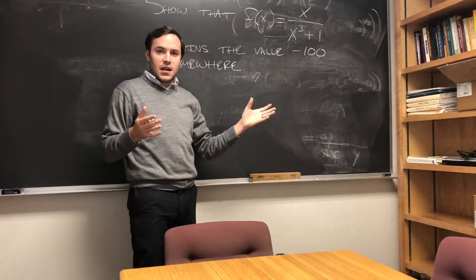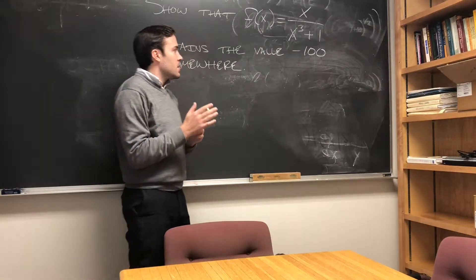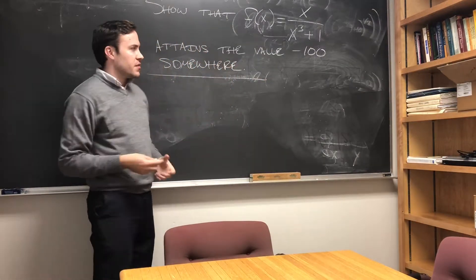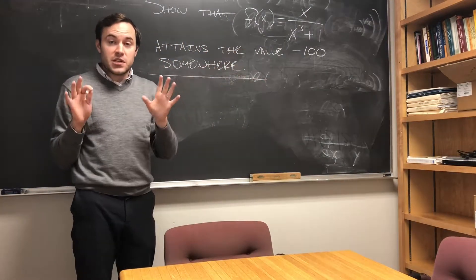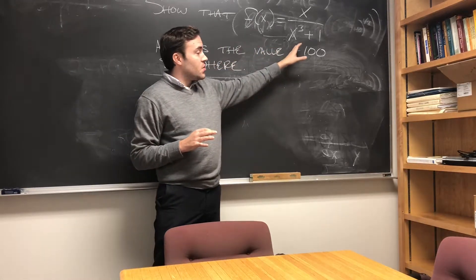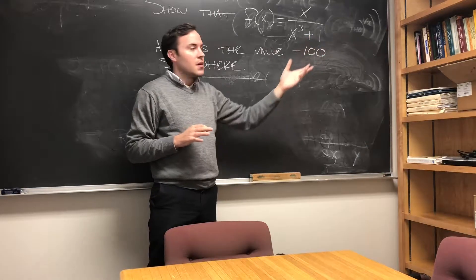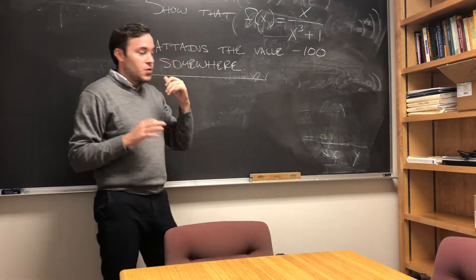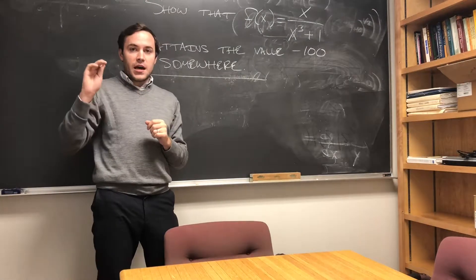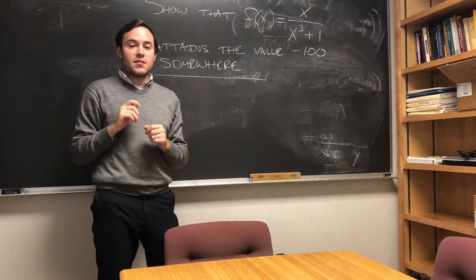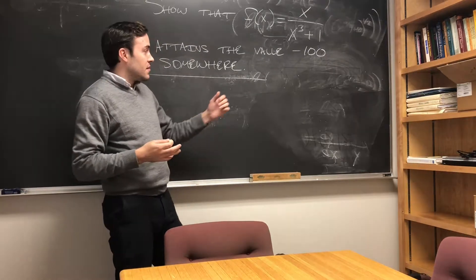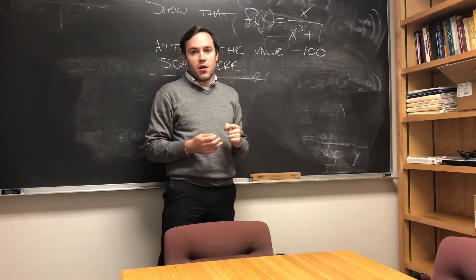One way that this function, or any function in general, can become quite large is if you ever accidentally divide by zero. If you get a vertical asymptote, your function could go to infinity or negative infinity on one side of it. And if you're going all the way down to negative infinity, you're probably going to hit negative 100 along the way.